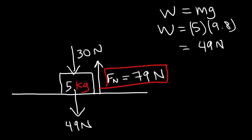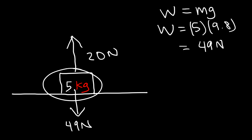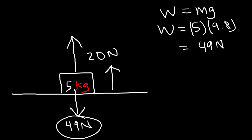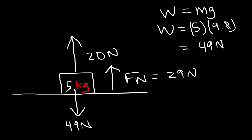Now, how can we decrease the normal force? One way to do that is to attach a rope to the block. Once you attach a rope to it, you need to pull the block up. You don't have to lift it off the surface, but if you apply an upward force acting through the rope — let's say an upward force of 20 newtons — this block will feel lighter against the horizontal surface. The surface doesn't have to support the entire weight of the block; it only needs to support 29 newtons, because you're supporting 20 newtons out of the 49 newtons. So applying an upward force decreases the normal force.